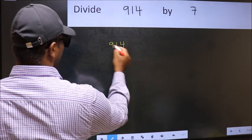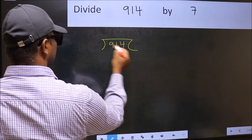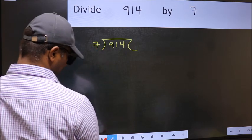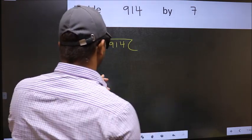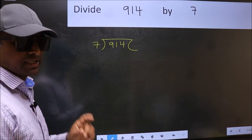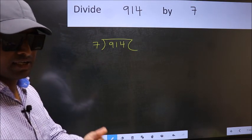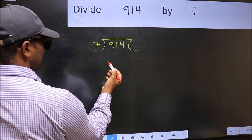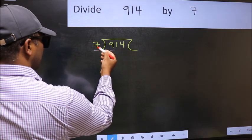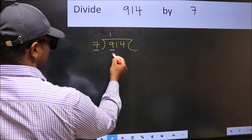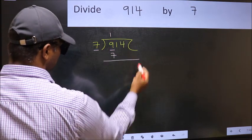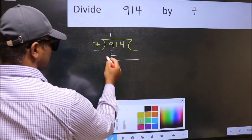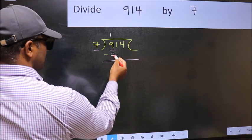914 and 7 here. This is your step 1. Next, here we have 9 and here 7. A number close to 9 in 7 table is 7 once 7. Now you should subtract. 9 minus 7, 2.